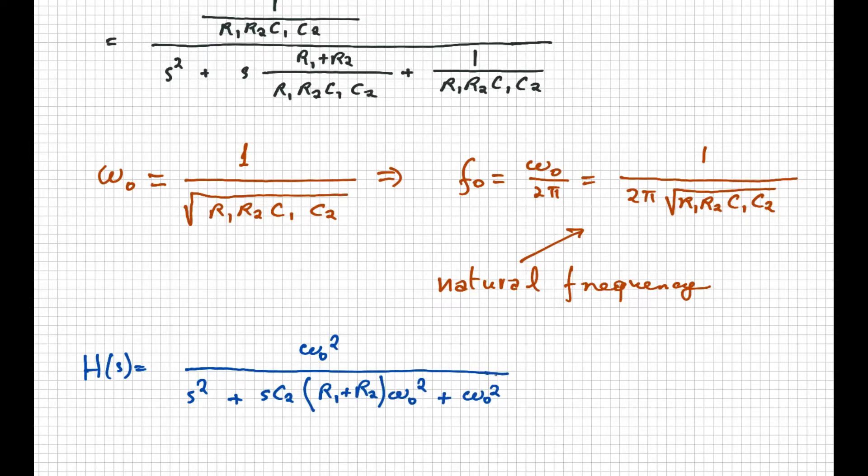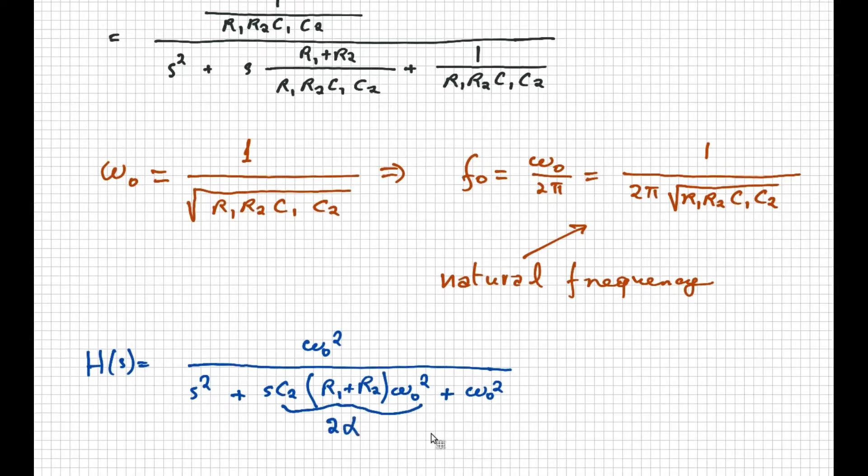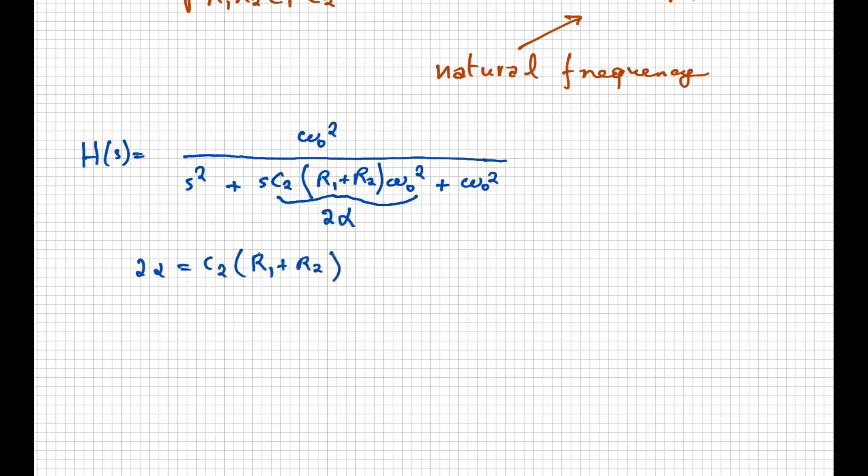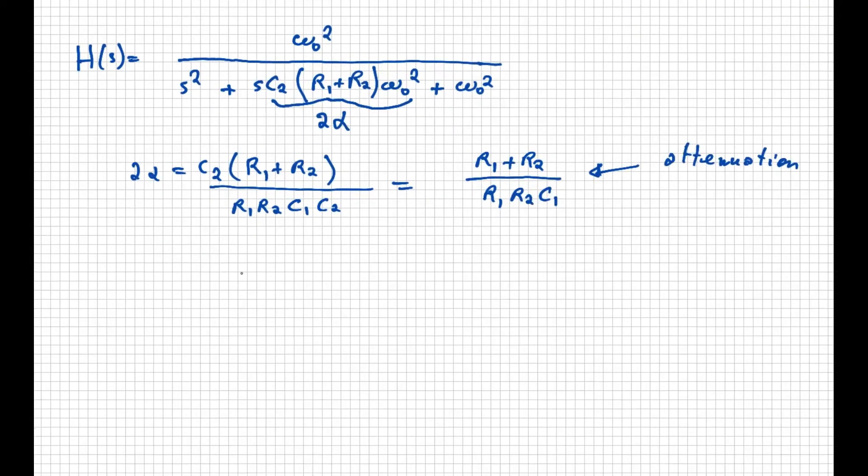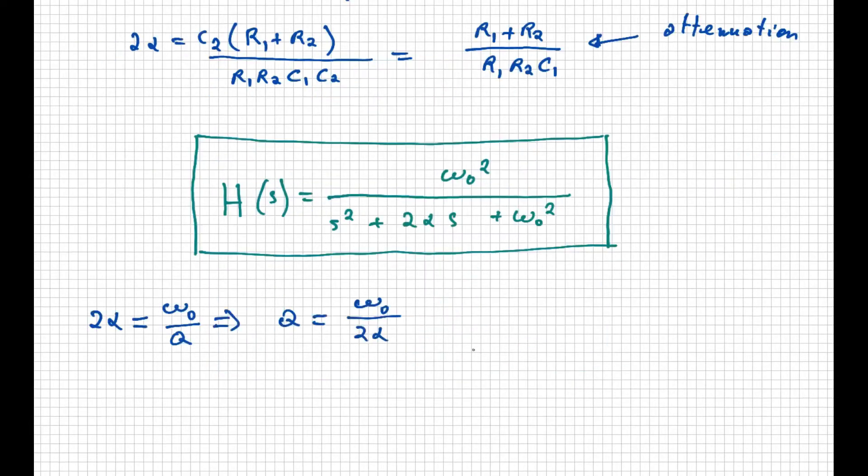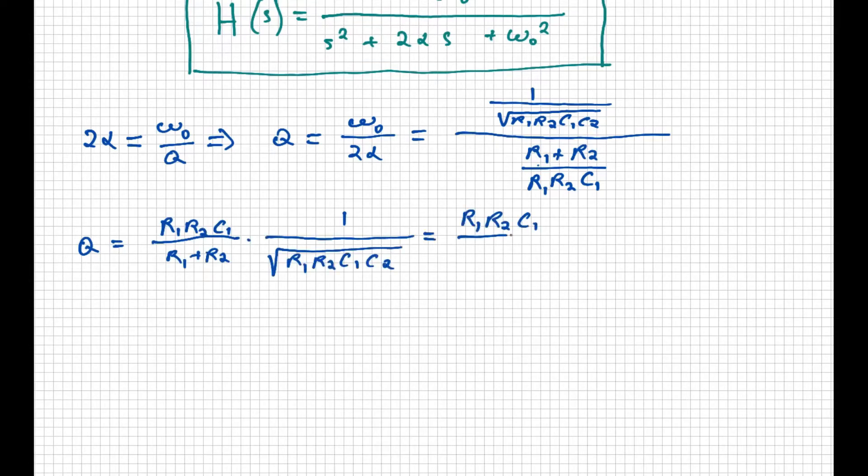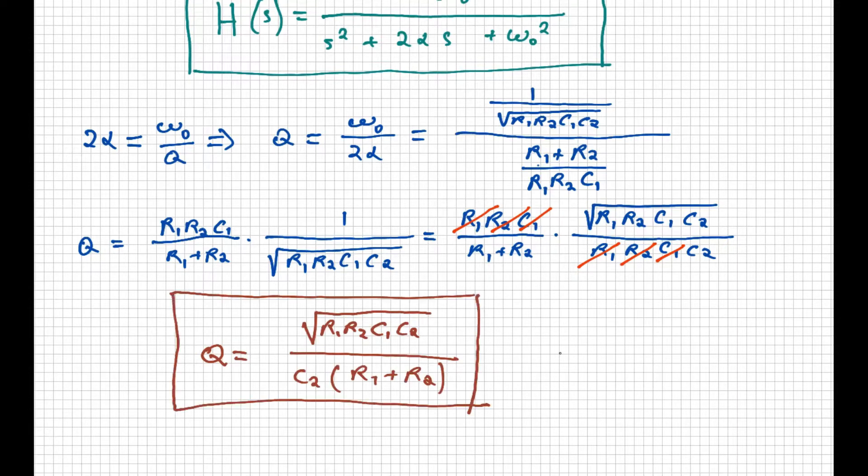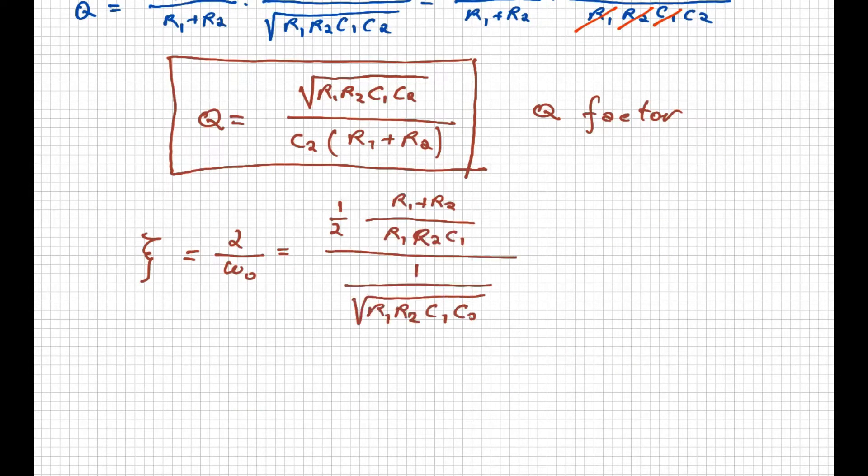And we can now define also a new entity which we call attenuation as part of the coefficient of the S in the denominator of the transfer function. We will see later the meaning of these two entities. Right now we just need to rewrite one more time the transfer function based on these values. And now we define yet another parameter which we call Q-factor as ω0 over 2α. And also its opposite, the damping ratio as α over ω0, or 1 over 2Q.